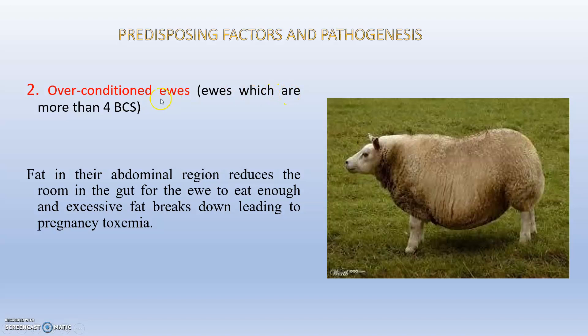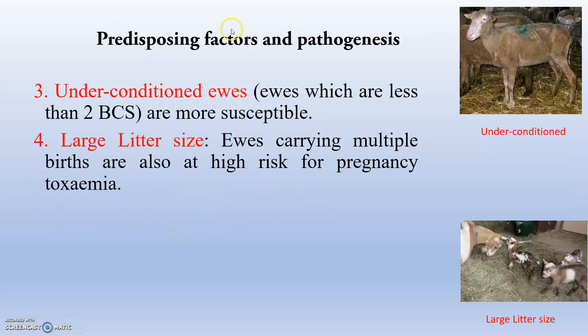Another predisposing factor is over-conditioned ewes — those with a body condition score above four. Excess abdominal fat compresses the rumen, reducing feed intake and leading to fat breakdown and pregnancy toxemia. Under-conditioned ewes (below score two) also fail to eat adequately. Large litter size is another factor, as multiple fetuses drain higher amounts of protein and glucose from the dam.